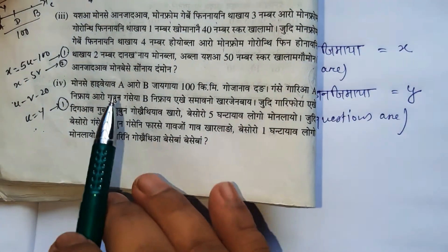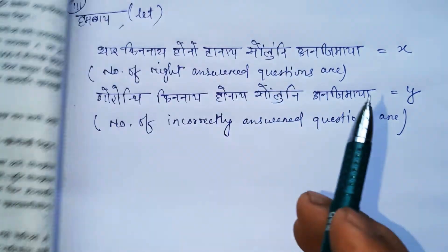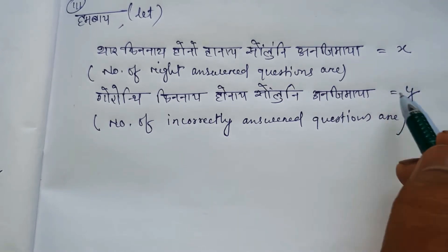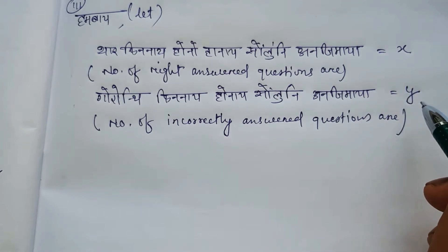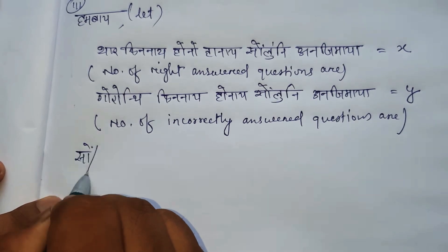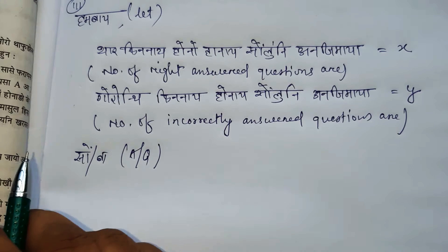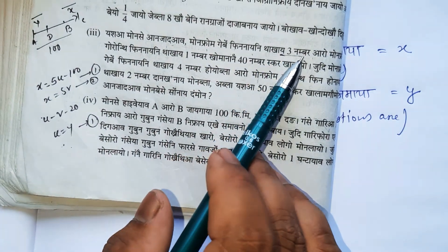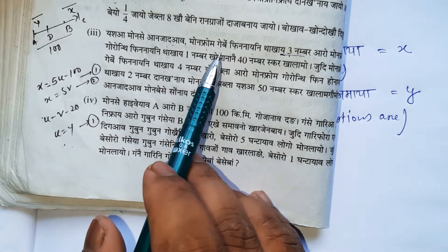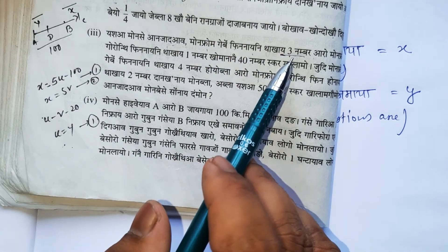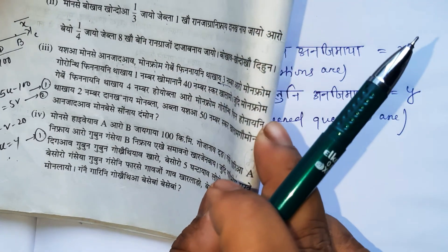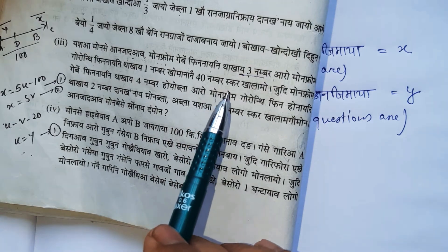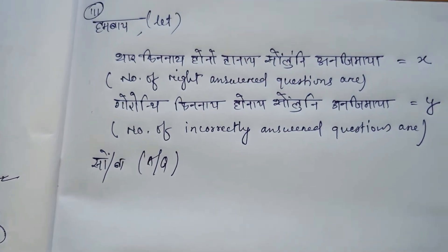We need to form equations from the two conditions. From condition one: 3 marks for each right answer and minus 1 for each wrong answer gives a score of 40. So the first equation is 3x minus y equals 40.